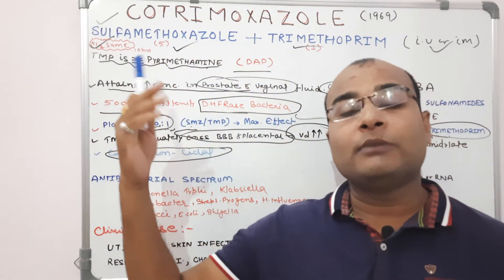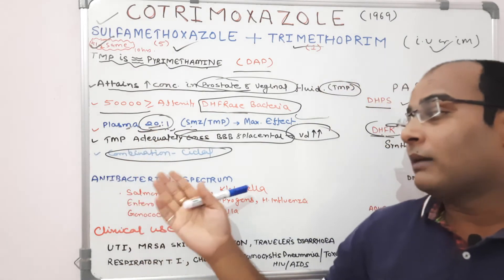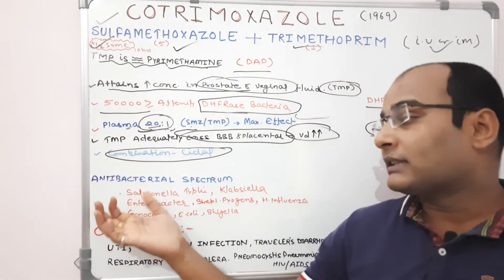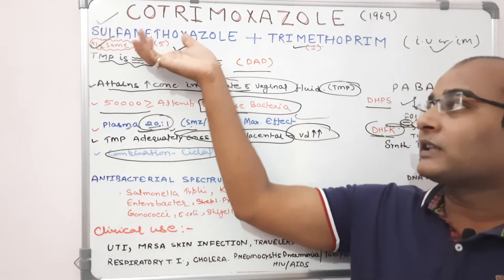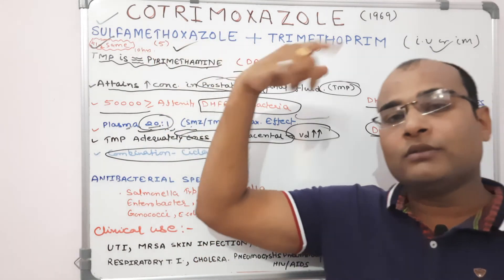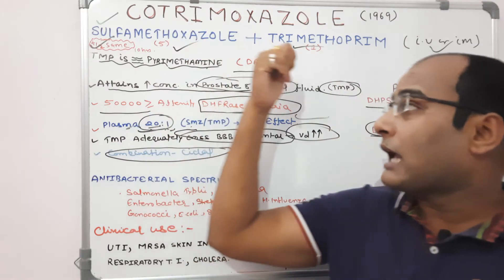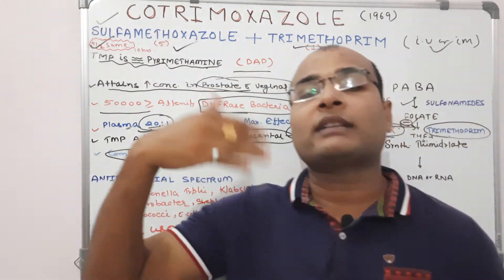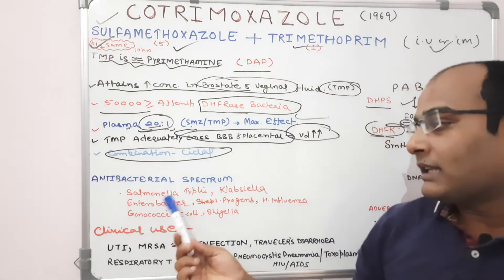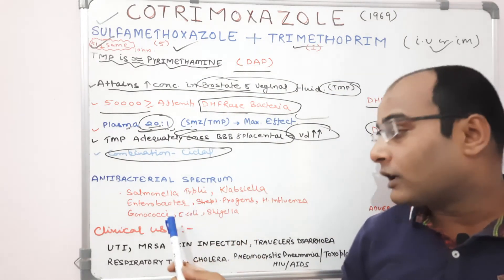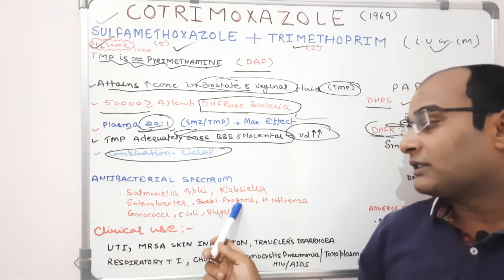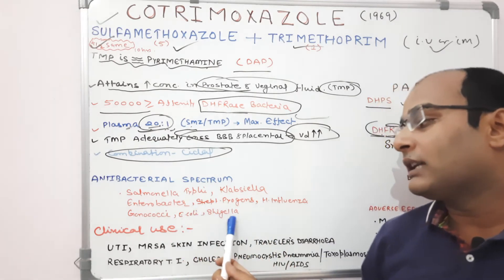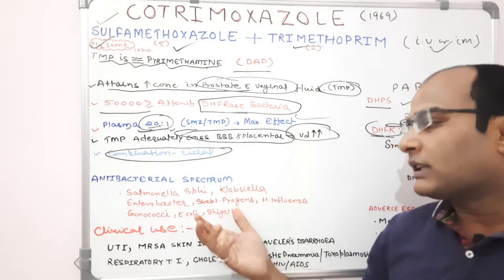The antibacterial spectrum of Cotrimoxazole covers bacteria that Sulfamethoxazole alone would cover, including Haemophilus influenzae, Chlamydia, and E. coli. But in the Trimethoprim combination, extra bacterial species are covered, such as Salmonella typhi, Klebsiella, Enterobacter, Streptococcus pyogenes, H. influenzae, Gonococci, E. coli, and Shigella — including organisms associated with meningitis and diarrhea.